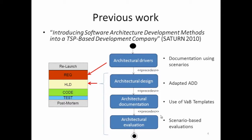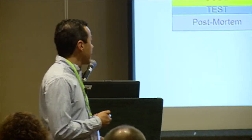I've been working with this company for a while. In 2010, I came to SATURN to present the first part of the work we had been conducting with them, which was related to adapting architectural methods into the Team Software Process. Considering the architectural development lifecycle, there are four important phases: architectural drivers activities — identifying primary functionality, quality attribute scenarios, and constraints. What we did was adapt the scenarios technique, introducing it in the requirements phase. The rest went into the high-level design phase of TSP, which included architectural design adapting ADD, architectural documentation adapting the views-and-beyond approach, and scenario-based architectural evaluation.